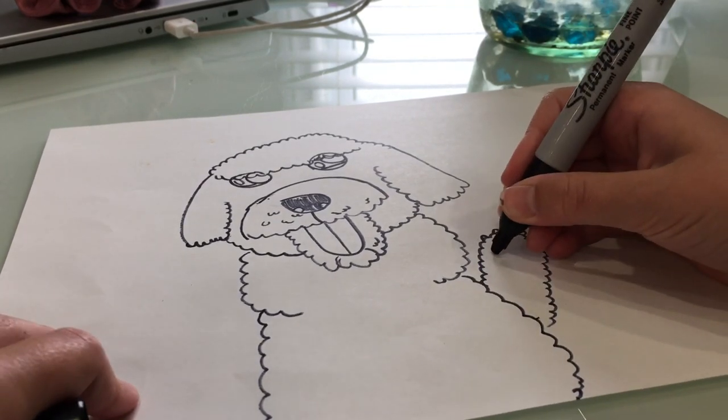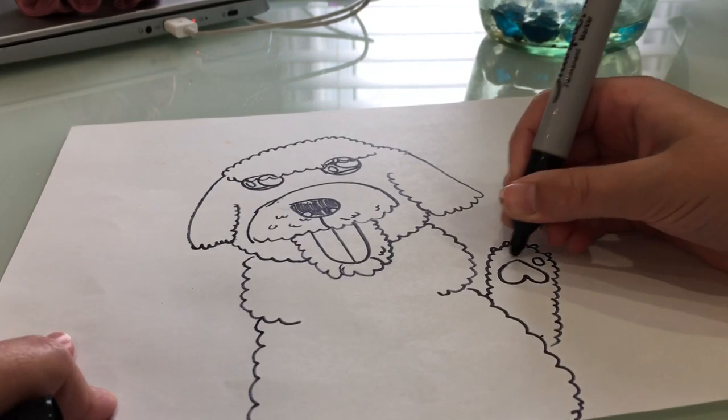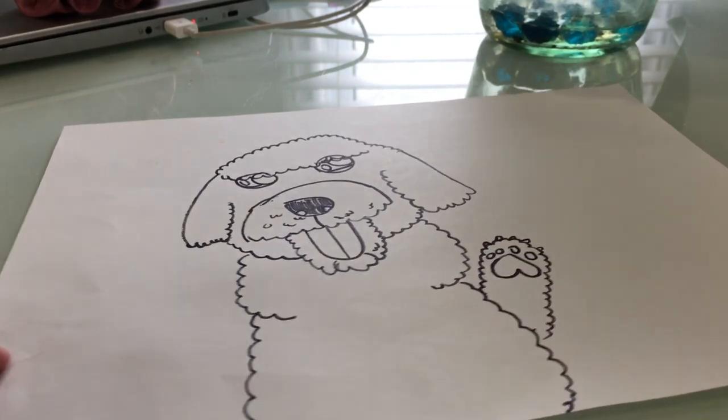And now, we're going to draw his little paw print. An upside down heart. And then, four little dots. And that's his paw print.